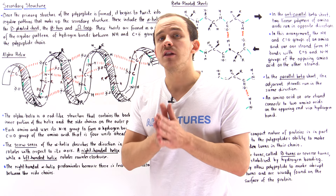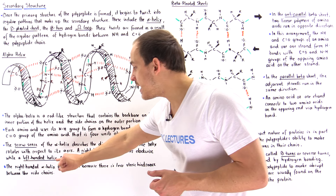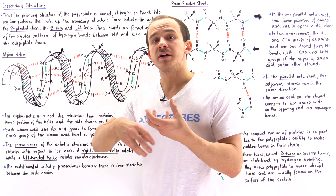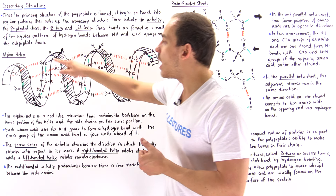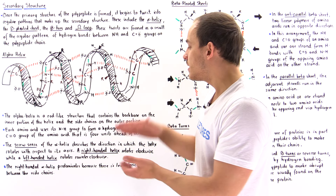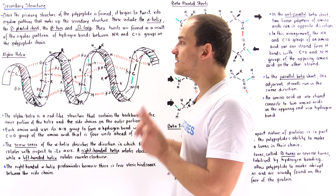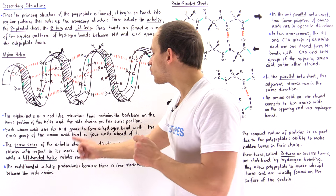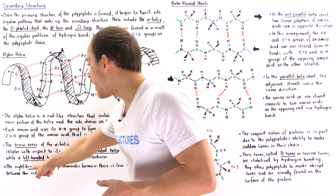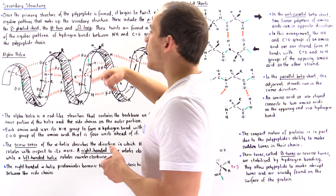We can also have a left-hand helix in which the directionality is reversed — it would be counterclockwise. The left-handed helix is much less stable because there is more steric hindrance: a greater number of collisions between the R-chains of our polypeptide. Because of that, the energy level of the left-handed helix is higher than that of the right-handed helix. So the right-handed alpha helix predominates because there is less steric hindrance between the side chains.